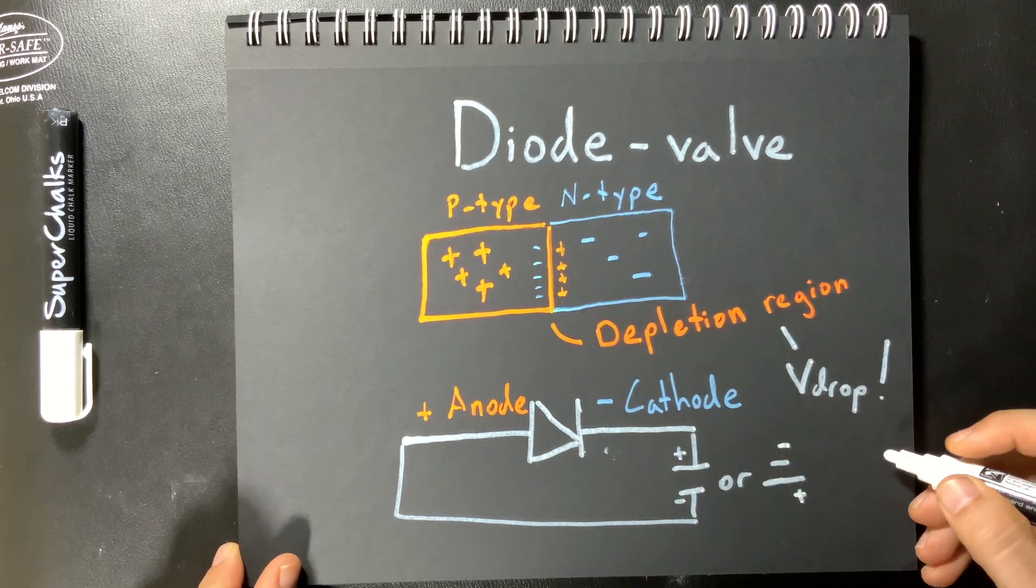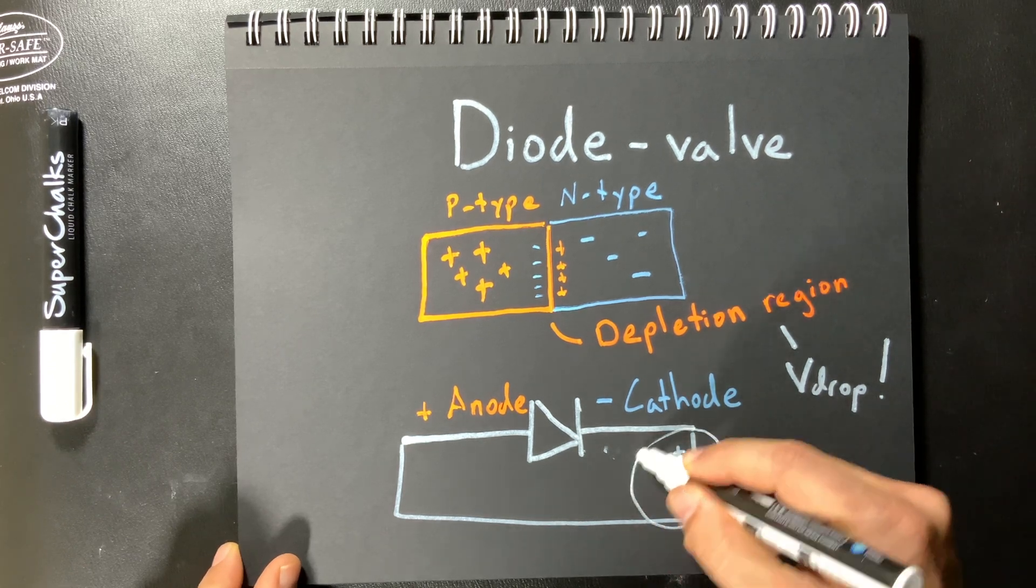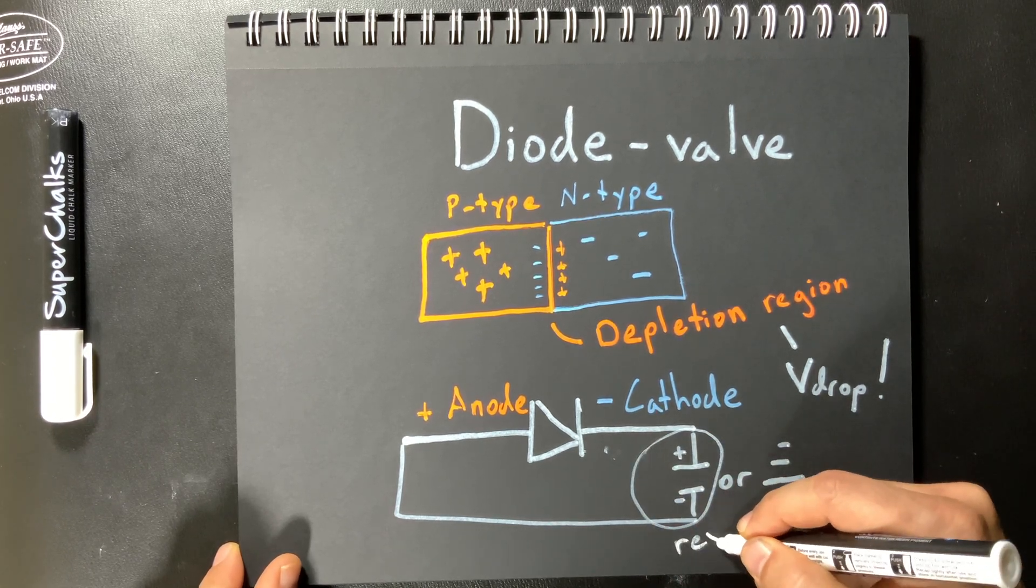So in this first configuration where I have the positive on top and the negative on the bottom that's what we would call reverse bias.